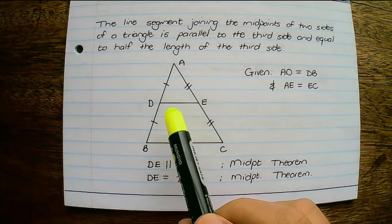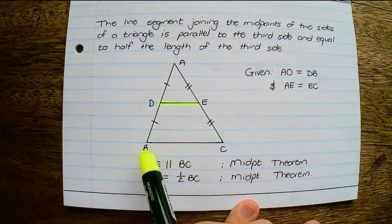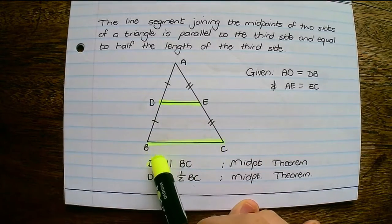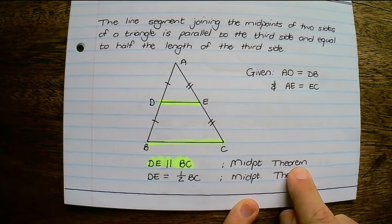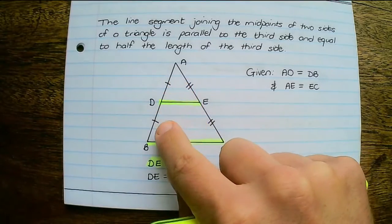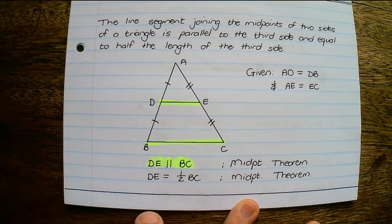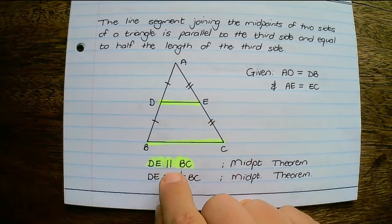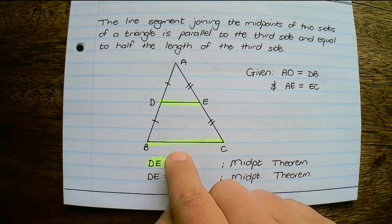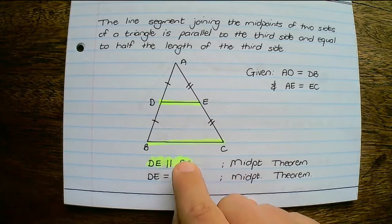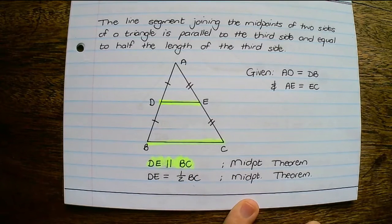Therefore we can make two statements. We can say that line DE is parallel to line BC — reason: midpoint theorem. The next statement is that line DE is half the length of line BC, so DE is equal to half of BC. That is the midpoint theorem.